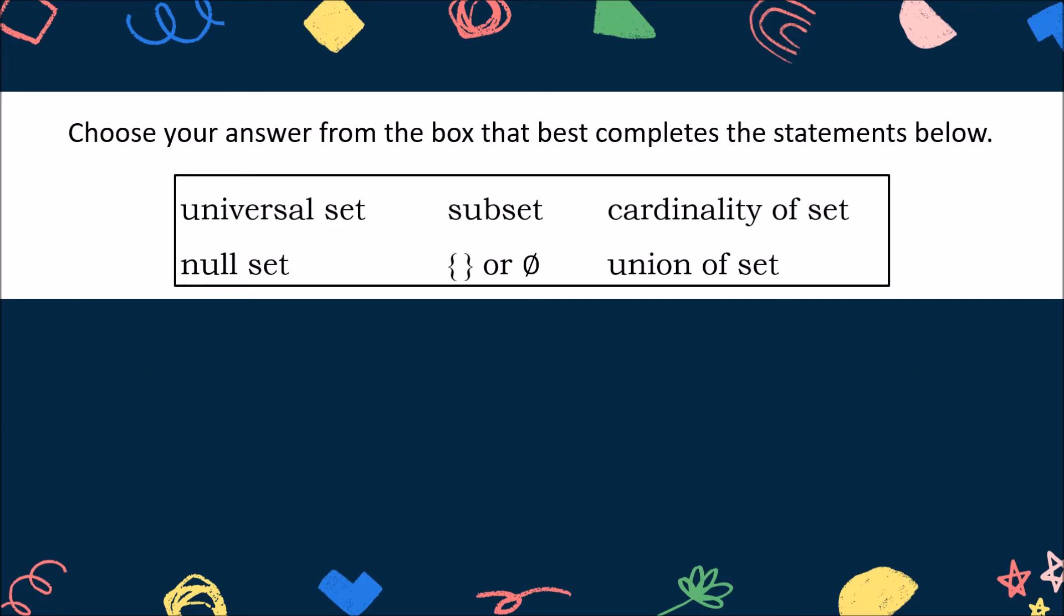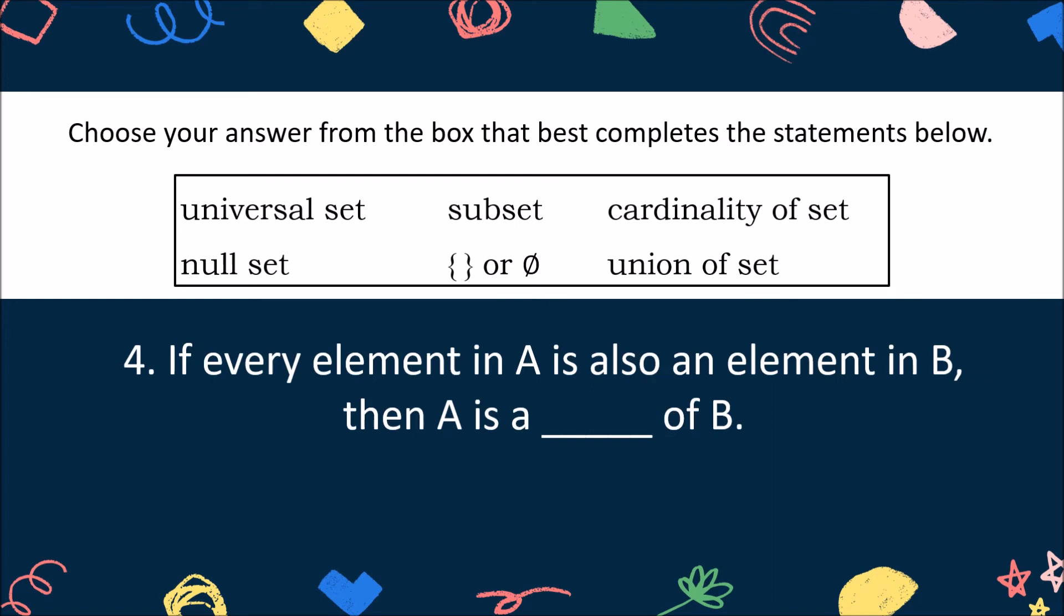Let's proceed with number 4. If every element in A is also an element in B, then A is a blank of B. The correct answer is subset.